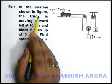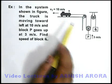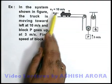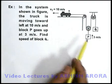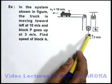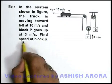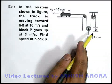In this example, we are given a system in which the truck is moving toward left at 10 meters per second, and this block P is going up at 3 meters per second. We are required to find the speed of block Q in this situation.